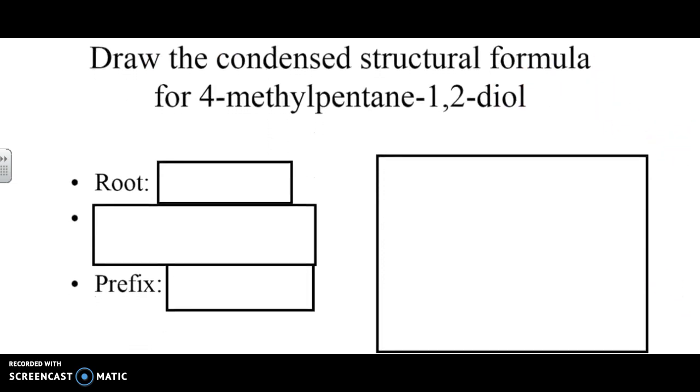Now, if we're trying to draw 4-methyl-pentane-1,2-diol, as a reminder, it's an E right here, because we've got two alcohol groups. If there's just one alcohol group, it'd be heptan-ol. So, now, what we're trying to do, we've got a pentane. So, there's our five-carbon chain.